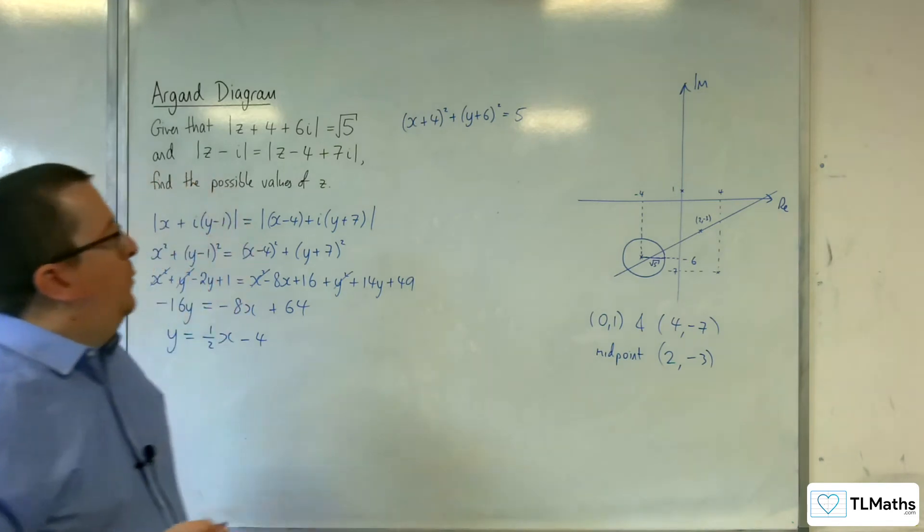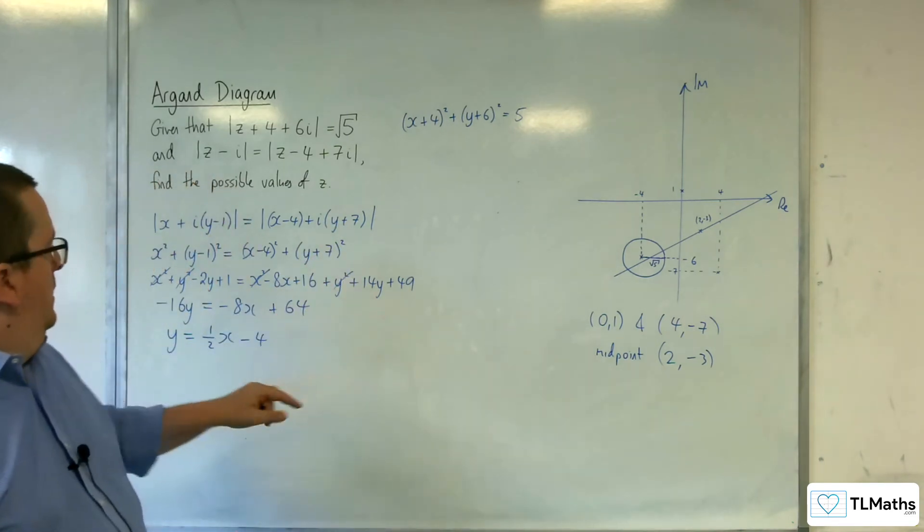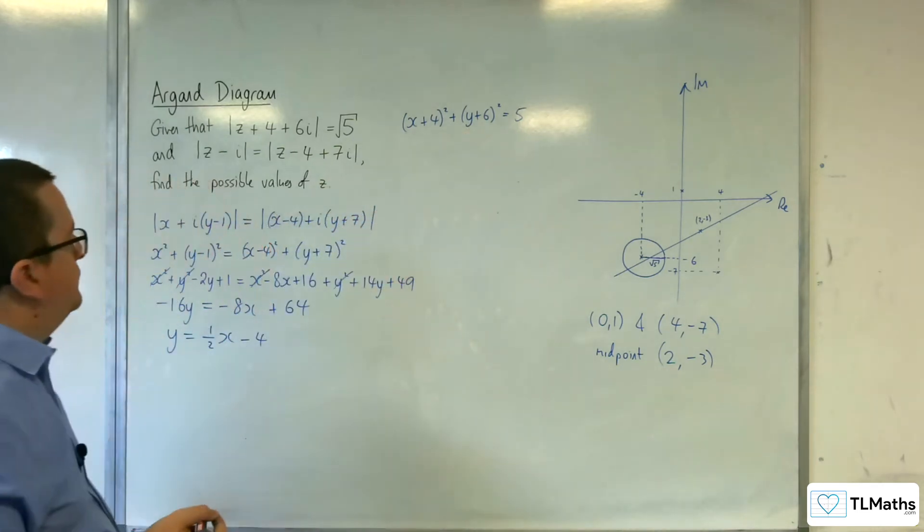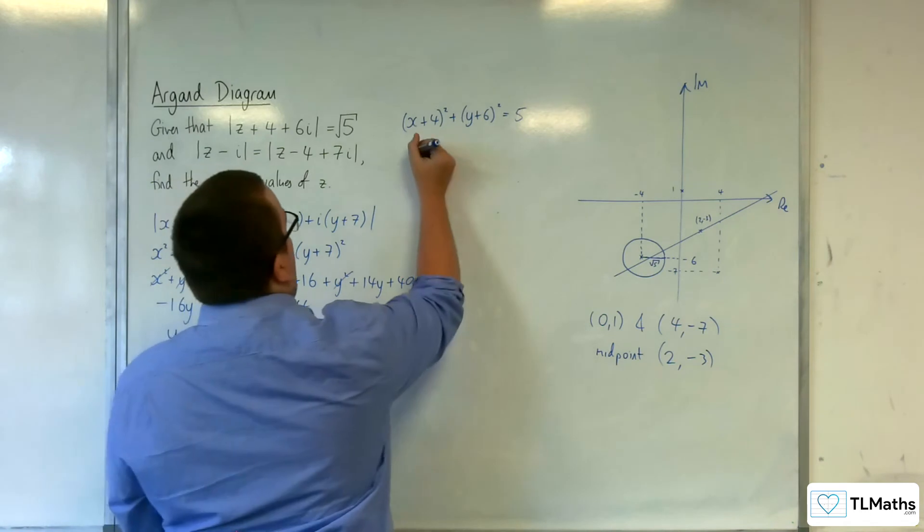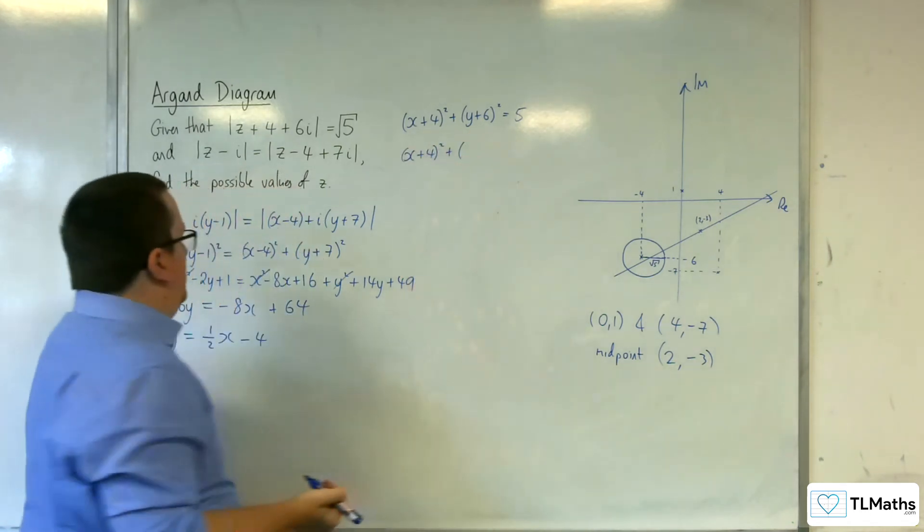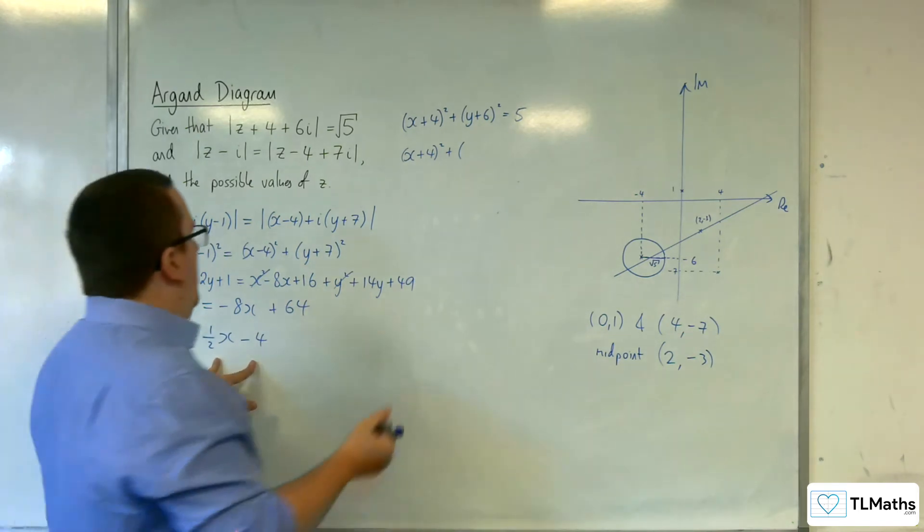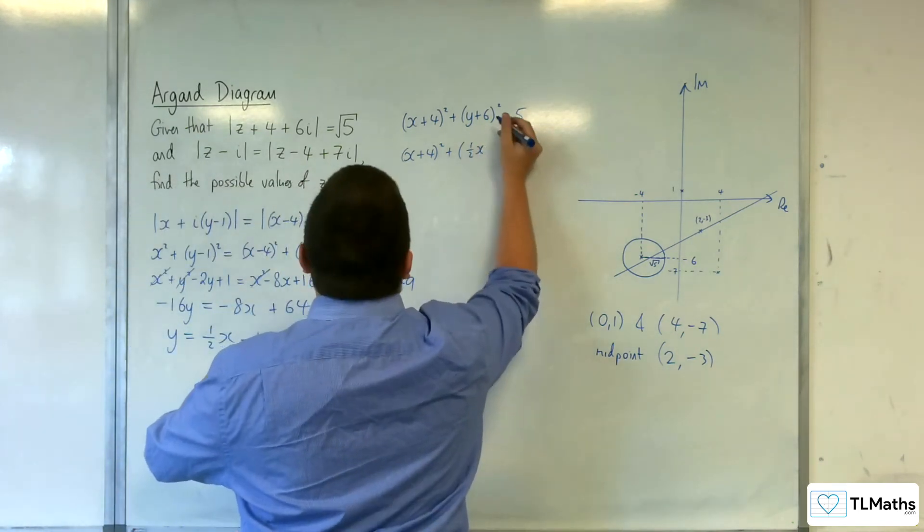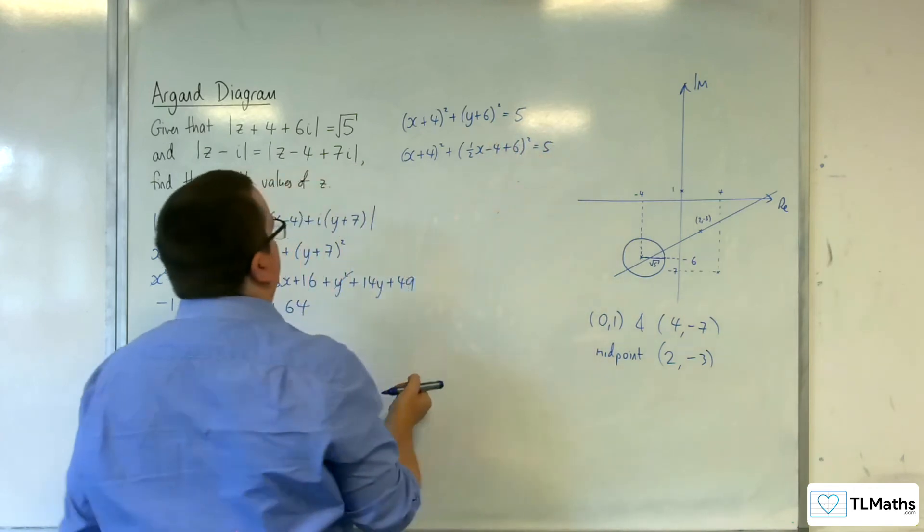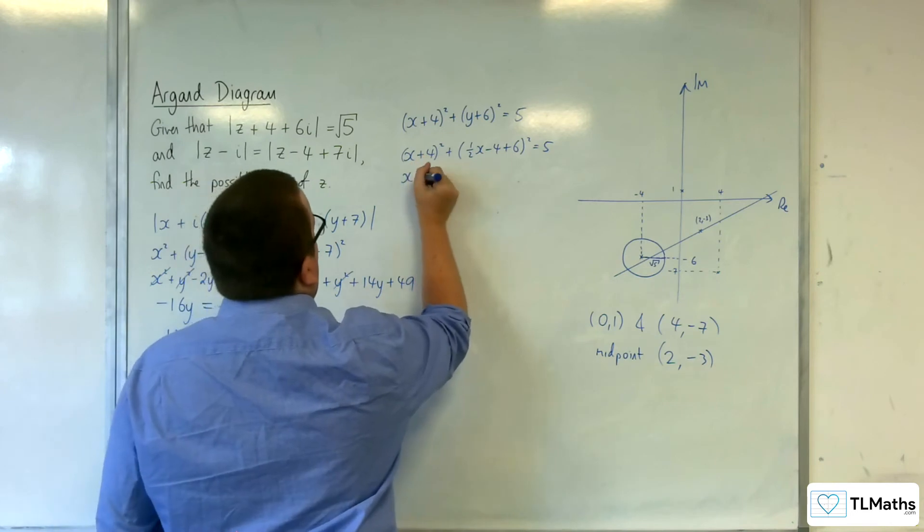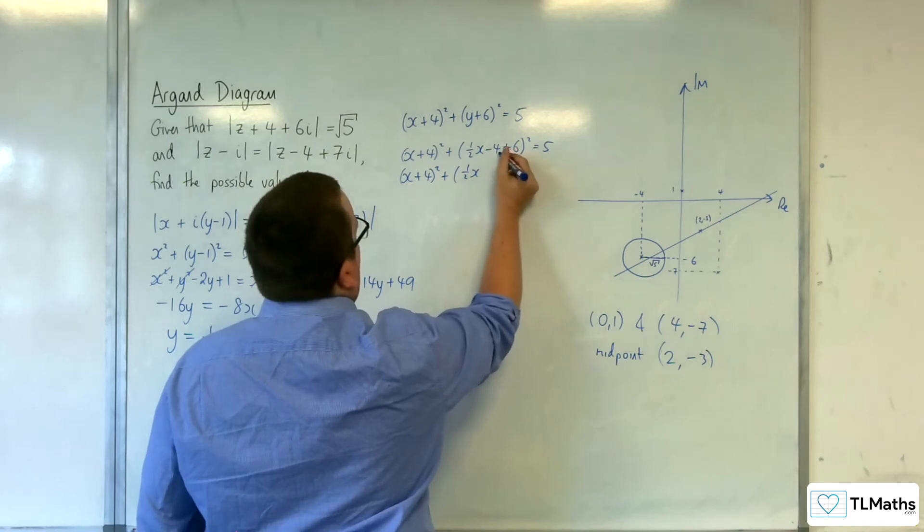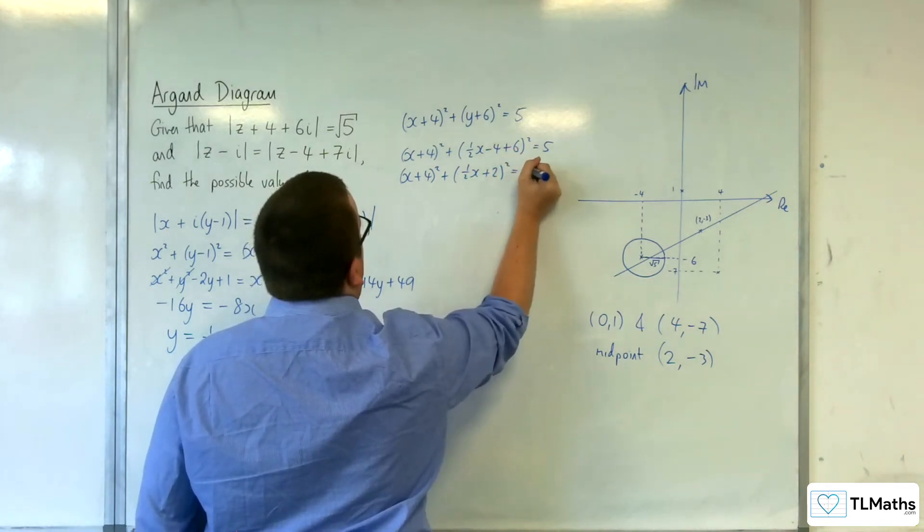So y equals a half x take away 4 is the equation of the line. So now I need to substitute that into my circle equation to work out where the intersections are. So we've got the x plus 4 squared plus, substituting in the y, so 1 half x take away 4 plus 6 squared equals 5. So x plus 4 squared plus 1 half x minus 4 plus 6, so plus 2 squared equals 5.